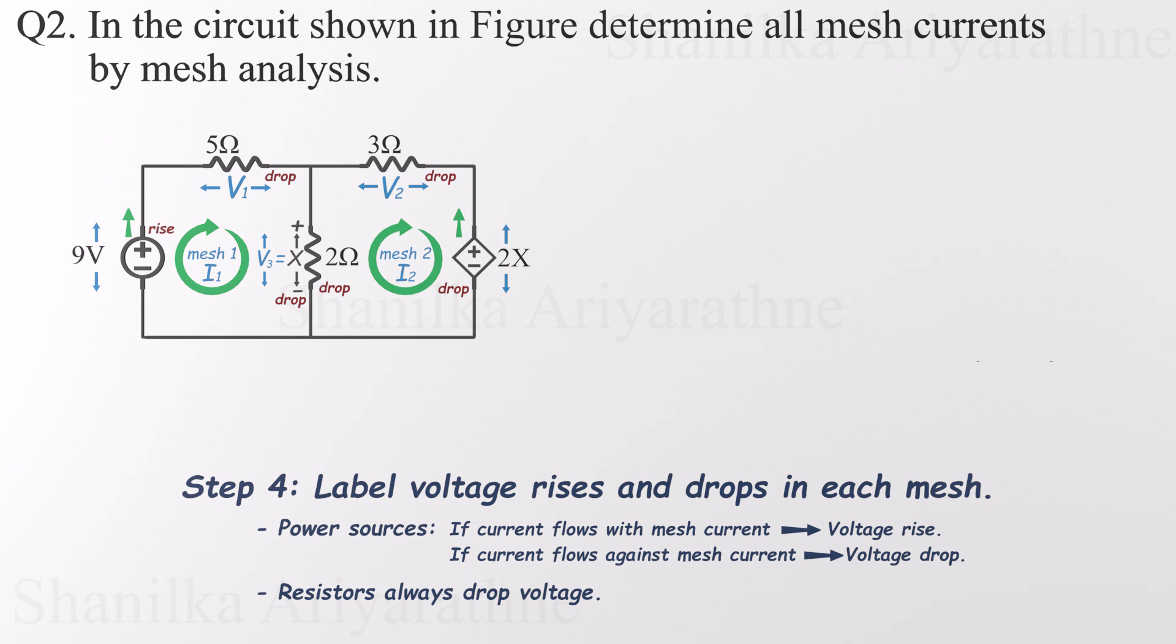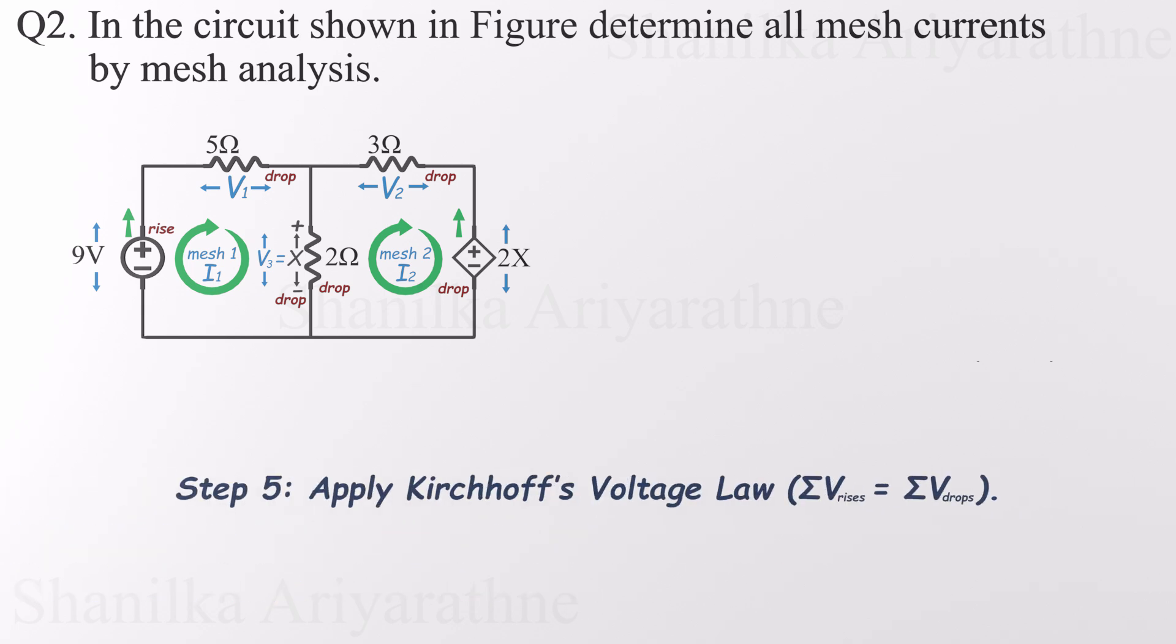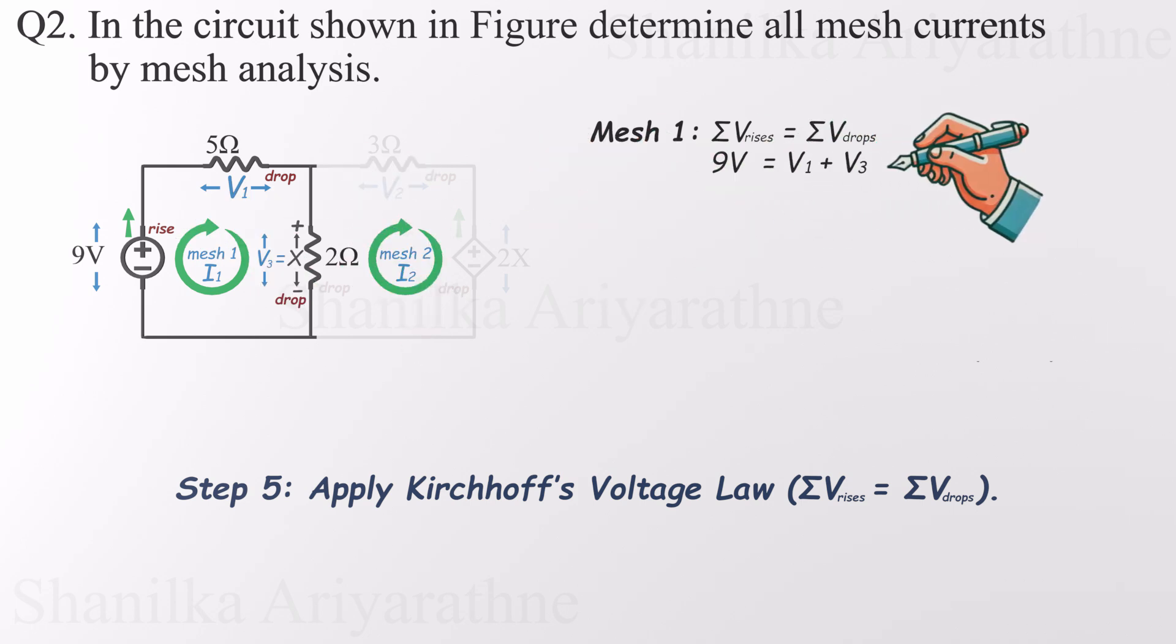Now we're ready to apply Kirchhoff's voltage law, starting with mesh one. As we loop around, we see a voltage rise of nine volts from the source, and two voltage drops across the resistors, V1 and V3. So the equation becomes nine volts equals V1 plus V3.